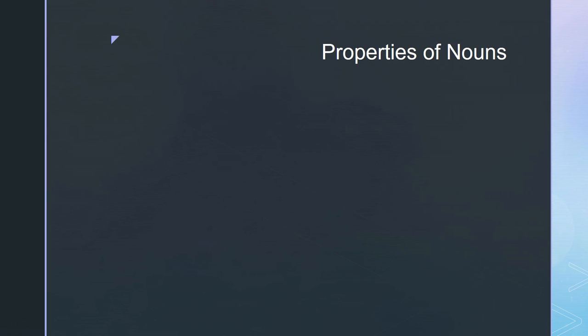Nouns have several properties. We're going to talk about three. Gender — gender is masculine, feminine, or neuter.